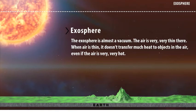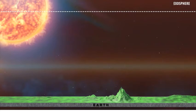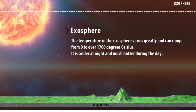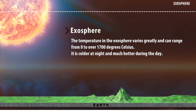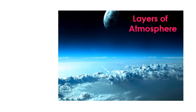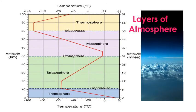The exosphere is almost a vacuum — the air is very thin there. When the air is thin, it doesn't transfer much heat to objects in the air, even if the air is very hot. The temperature in the exosphere varies greatly and can range from 0 to over 1,700 degrees Celsius. It is colder at night and much hotter during the day. Here is a simple representation and summary of the temperature and altitude of the layers of the atmosphere.